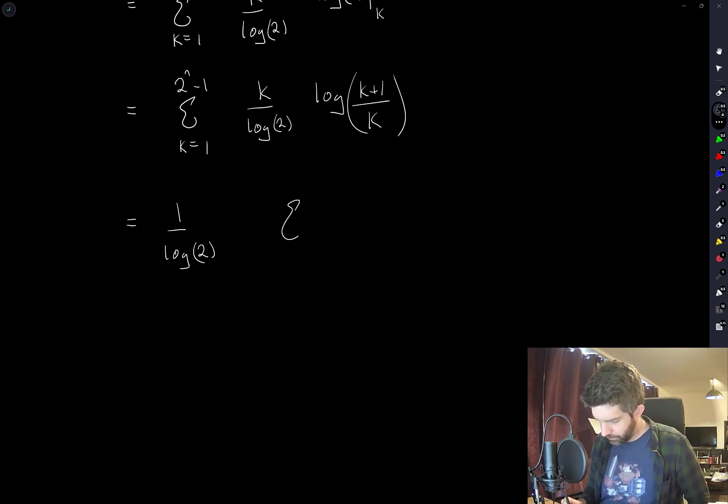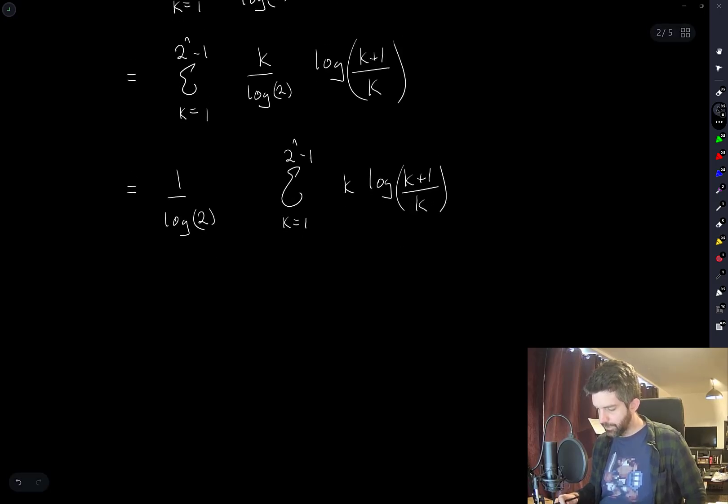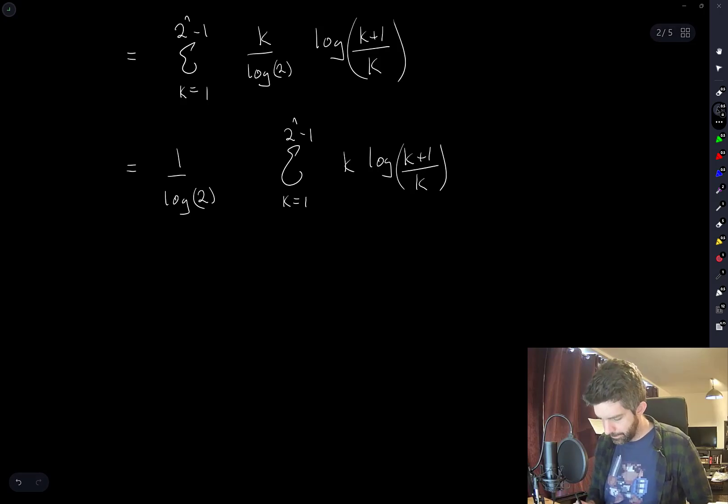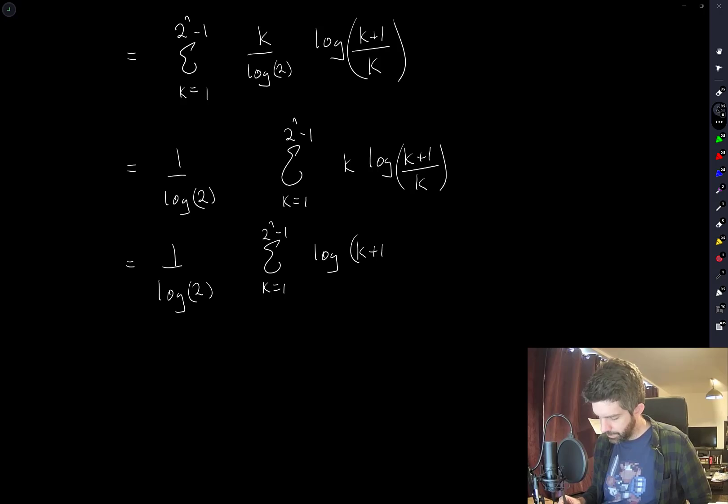This summation looks pretty ugly. K log K plus 1 over K. It looks like there's sort of a telescoping thing going on here. Let me write this one more time as log K plus 1 to the K divided by K to the K.